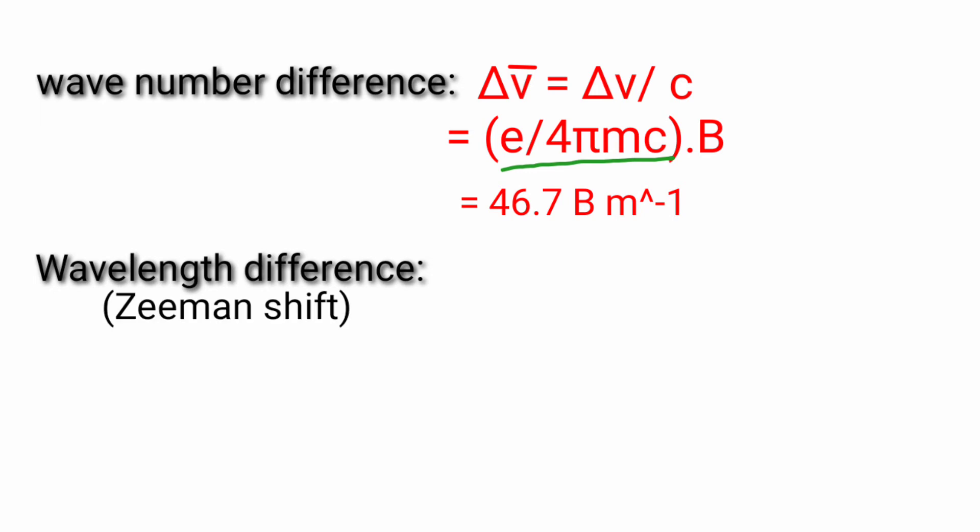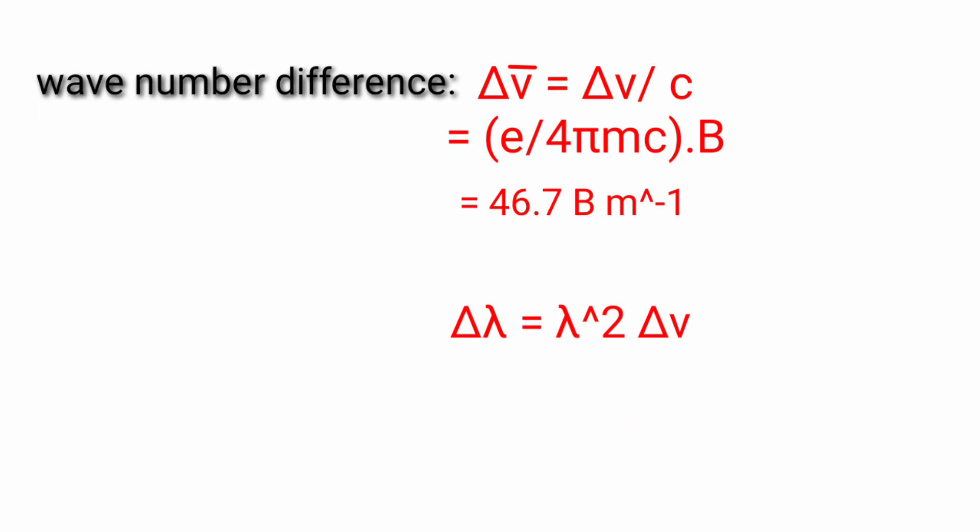Wave number difference has become delta nu bar. So this is equal to delta nu by c. If we put the value here, this will be 46.7B per meter. Wavelength difference and Zeeman shift, this will be delta lambda, that is equal to lambda square into wave number difference. If we put value here, we have lambda square into EB by 4 pi mc. This is about normal Zeeman effect.